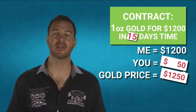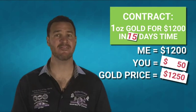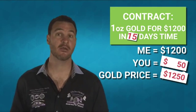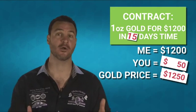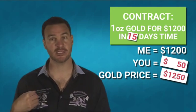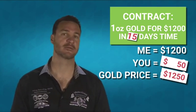Alternatively, the trusted third party can give me the $50 security now so that I can go and buy a new futures contract for $1,250, using my $1,200 and your $50.